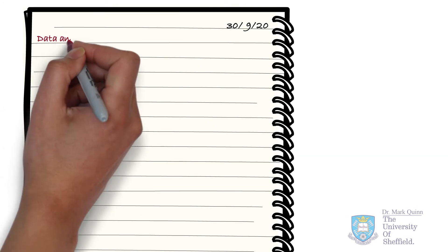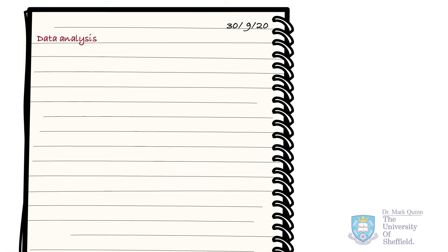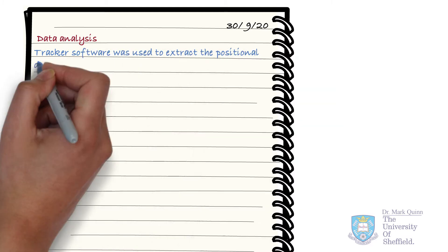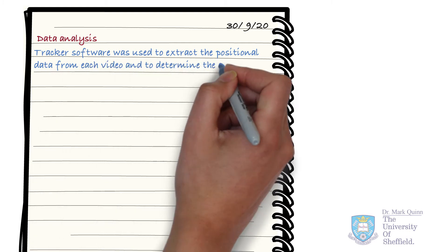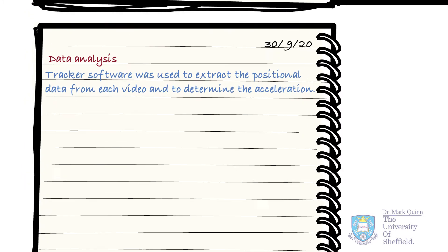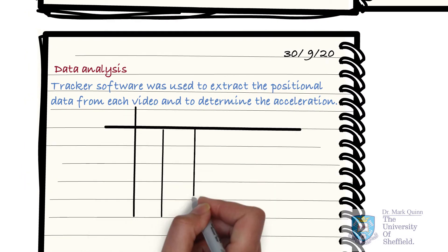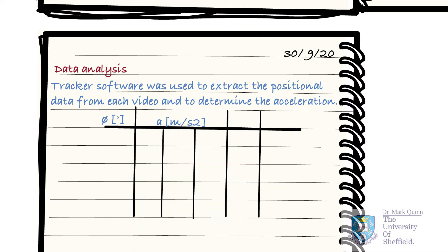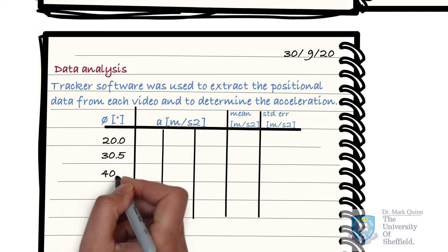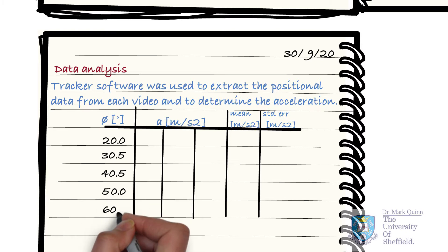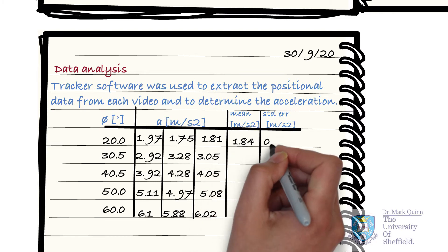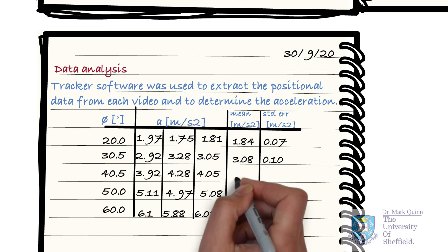In this example, we have to first extract the positional and acceleration data from the videos. This may involve multiple steps, so record any details of this process for future reference. We will have to record results from the analysis in a table. Like sketches, tables of data are another regular feature of lab books. Clear data is essential, so use a ruler to divide the columns and ensure that the column headers have units specified. Place the independent variable on the leftmost column and leave sufficient columns for the repeat measurements. You may also wish to show the mean, standard deviation, and the error value for each row.